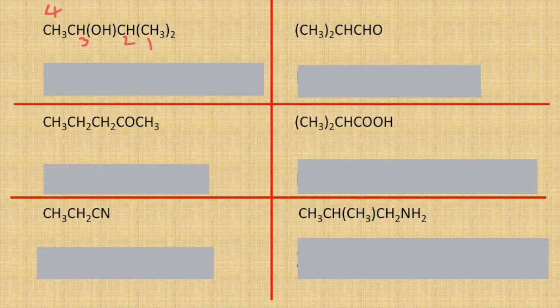Coming off carbon number three is an OH group, so it's butan-3-ol. And coming off number two is a methyl group, so it's going to be 2-methylbutan-3-ol.